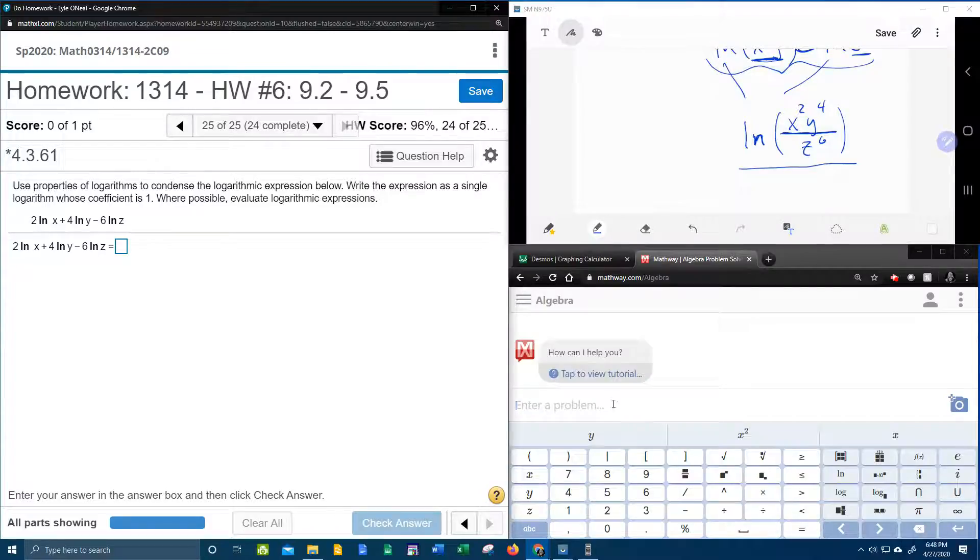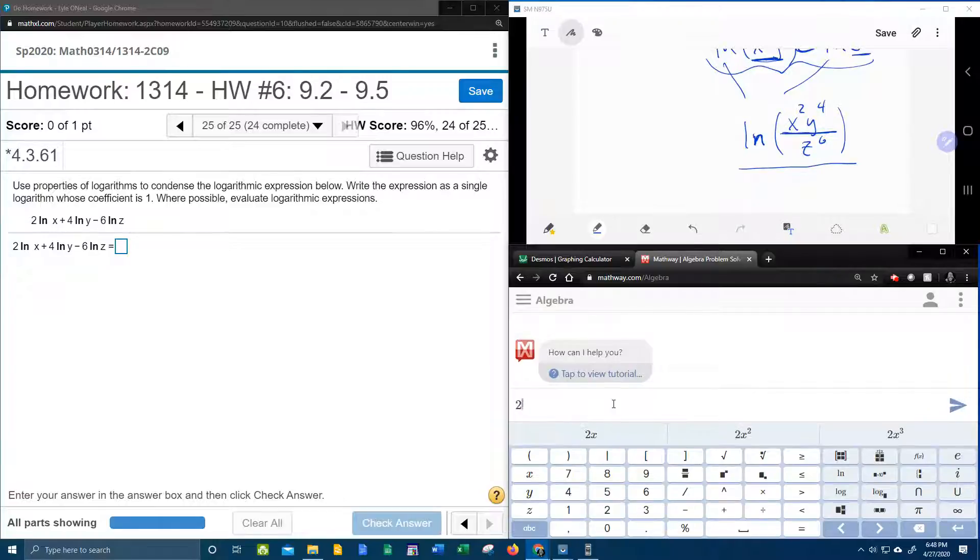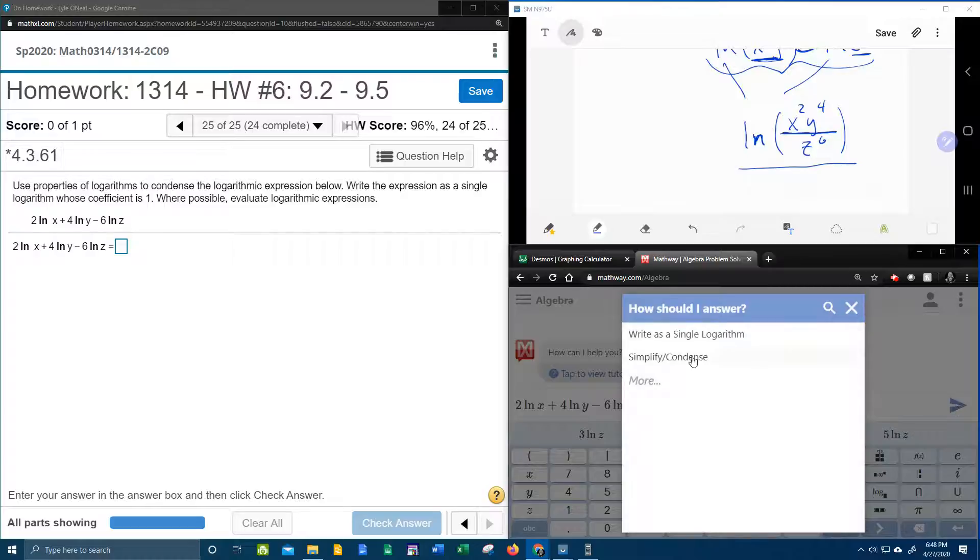And so I would like to check that using Mathway. Now I've not tried this yet. We're going to see if Mathway will do it for us. So we're going to have 2 natural log x plus 4 natural log y minus 6 natural log z. Now let's see if it will condense it for us. Oh, look at this. We want to write as a single logarithm, but we also want to condense. So I'm thinking we can choose either one of these. I'm going to go with the first one.